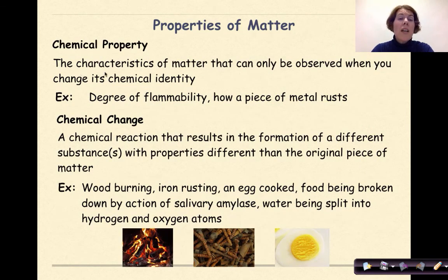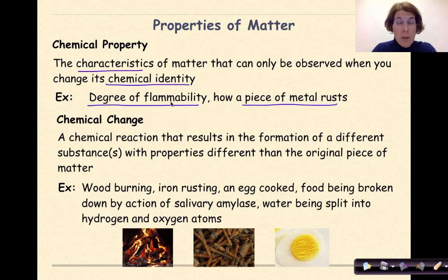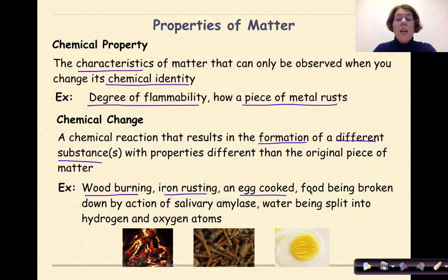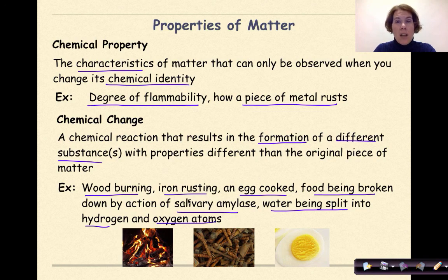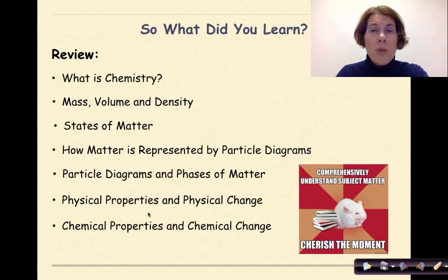A chemical property is defined as the characteristics of matter that can only be observed when you change its chemical identity. So for example, how flammable something is or how a piece of metal rusts. A chemical change will result in the formation of a different substance with properties different than the original piece of matter. Chemical changes might include wood burning, iron rusting, cooking an egg, food being broken down by salivary amylase during digestion, water being split into hydrogen and oxygen atoms. These are all examples of chemical changes.